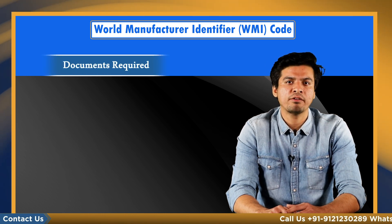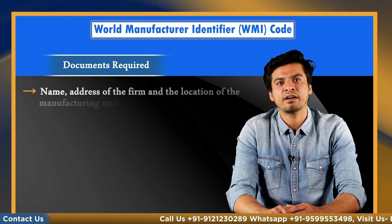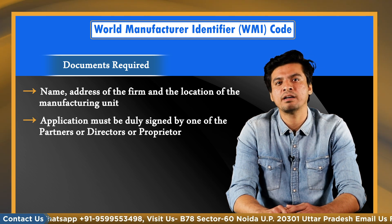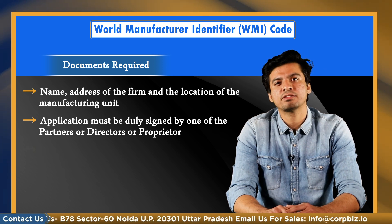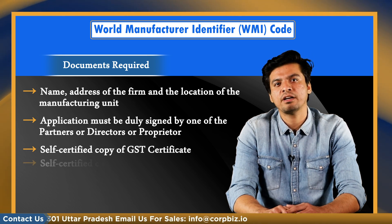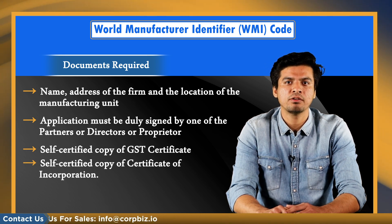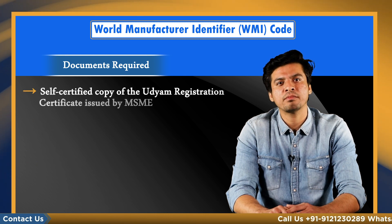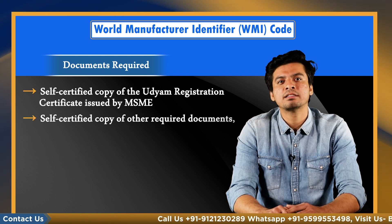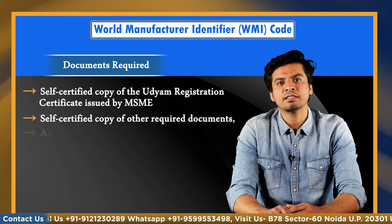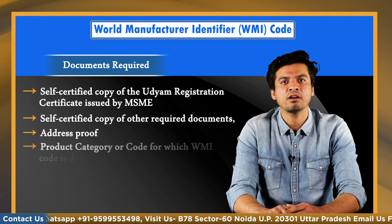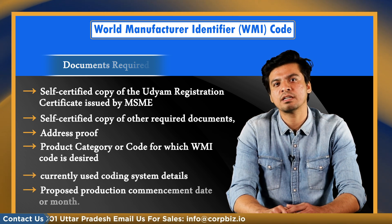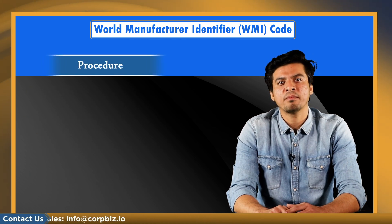The vital documents required for WMI code registration are: name and address of the firm and location of the manufacturing unit; the application must be duly signed by one of the partners, directors, or proprietor; self-certified copy of GST certificate; self-certified copy of certificate of incorporation; memorandum of association and articles of association or partnership deed; self-certified copy of the UDYAM registration certificate issued by MSME; self-certified copy of other required documents if any; any address proof; product category or code for which WMI code is desired; currently used coding system details; and proposed production commencement date or month.